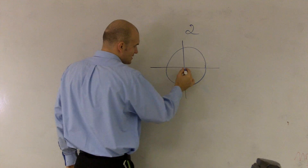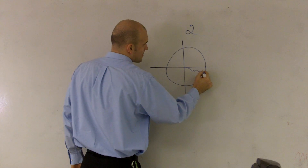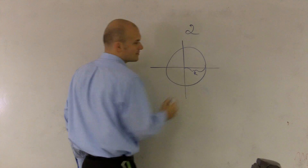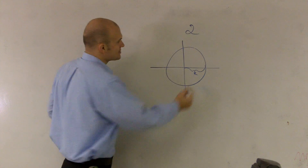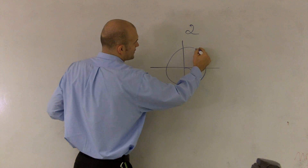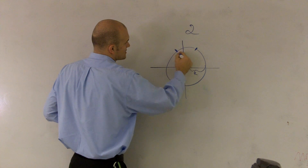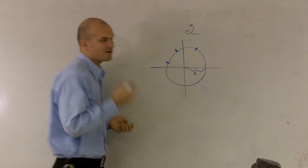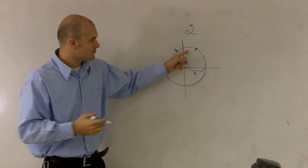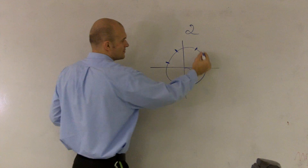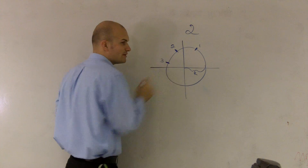We remember radians is the distance of our radius. So if I was going to take this distance and wrap it around — roughly one radian, two radians, three radians, roughly. I know my circle is not very great, but that's one radian. Here would be two radians. Here would be three radians.